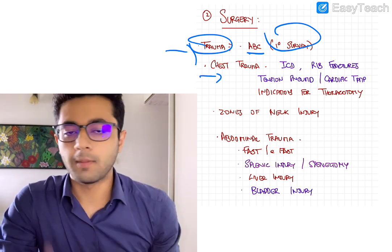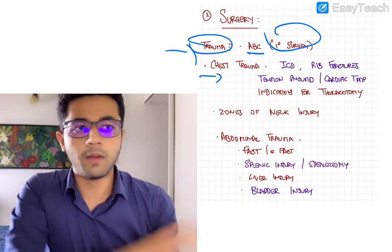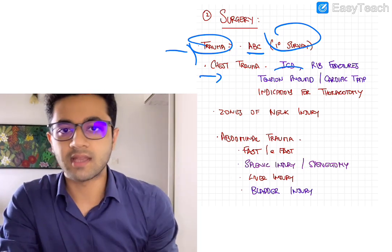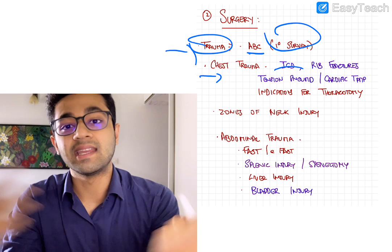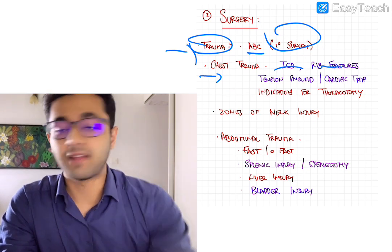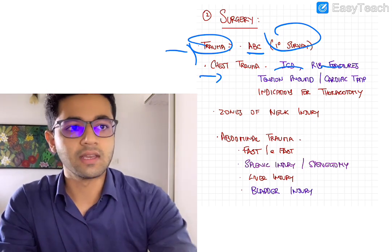Coming to chest trauma, the important stuff, again I've written in purple, include ICD, when to insert ICD, what are the advantages of ICD, and needle thoracotomy. Rib fractures,